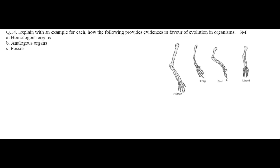Explain with an example for each how the following provides evidence in favor of evolution in organisms: homologous organs, analogous organs, and fossils. Let's see each one in detail.